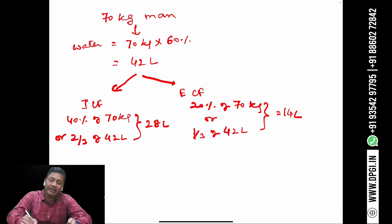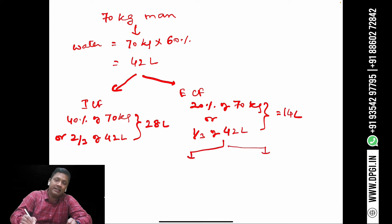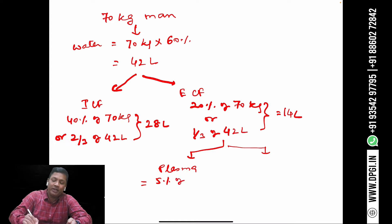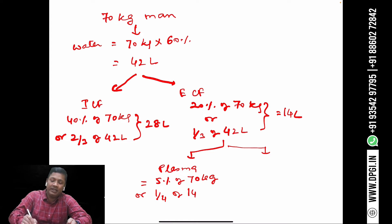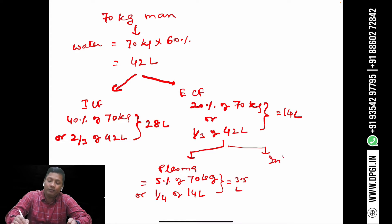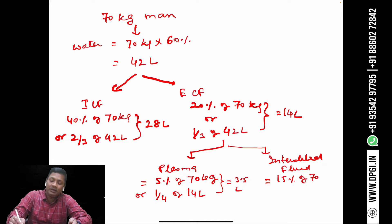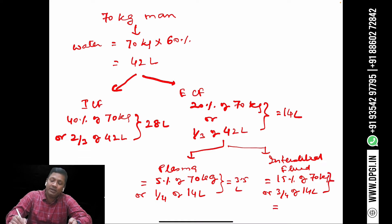The ECF is further divided into plasma and interstitial fluid. The plasma equals 5% of 70 kg, or one-fourth of 14 liters ECF, giving 3.5 liters. The interstitial fluid equals 15% of 70 kg, or three-fourths of 14 liters ECF, giving 10.5 liters.